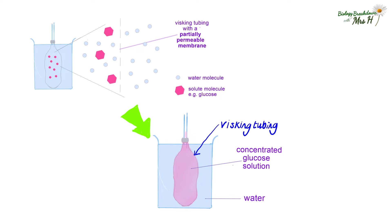Which way will the water molecules move? What will happen to the level of liquid in the tube? Well, there is a higher water concentration outside. So water molecules will move into the tubing and the level of liquid in the tubing will increase.